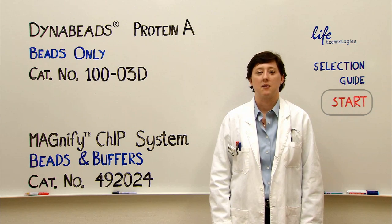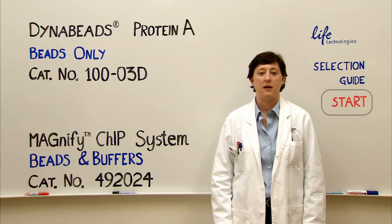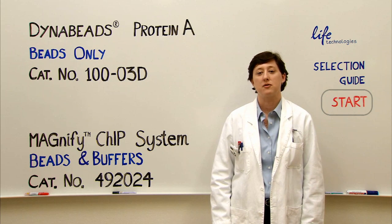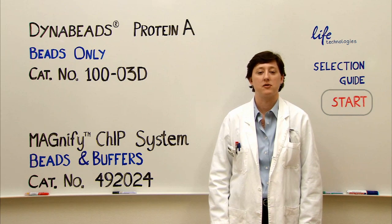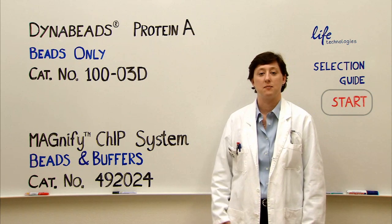The Protein A beads can be used with both high and low cell numbers. If you're working with low cell numbers from 10,000 to 300,000 and you're looking for a solution that includes pre-made buffers for maximum ease of use, we recommend that you use the MAGnify ChIP system.